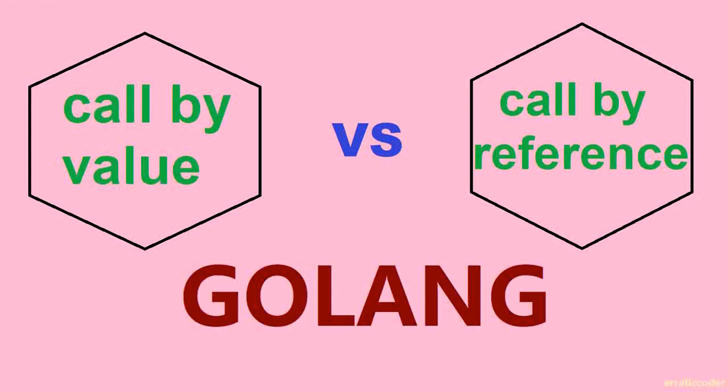Hello everyone, welcome back. In this video we will talk about call by value and call by reference in Go. These are the different methods that are being used to pass an argument while calling the function.